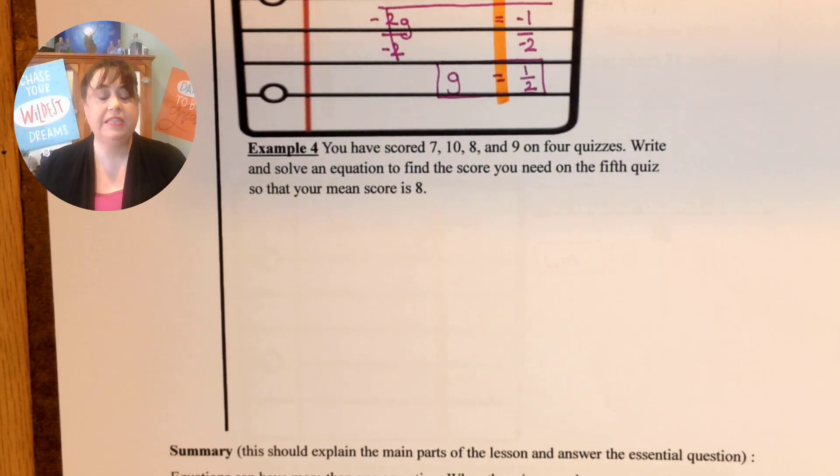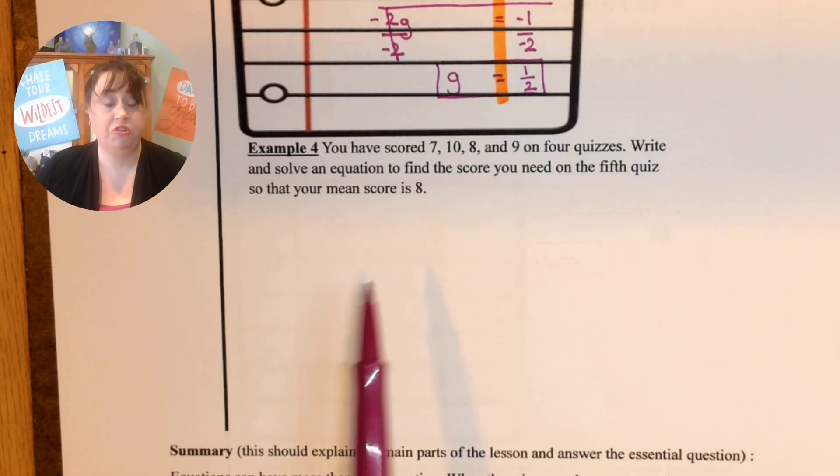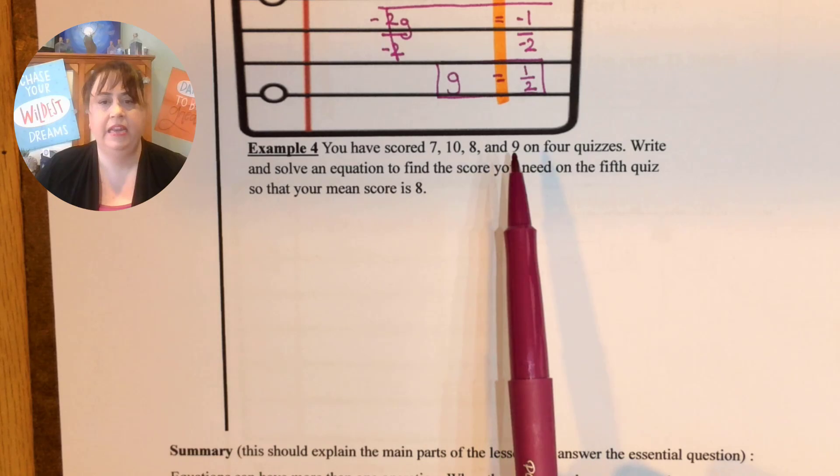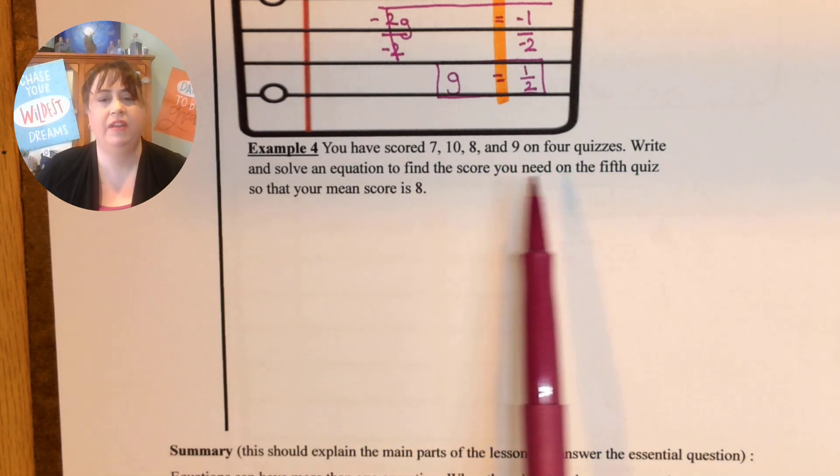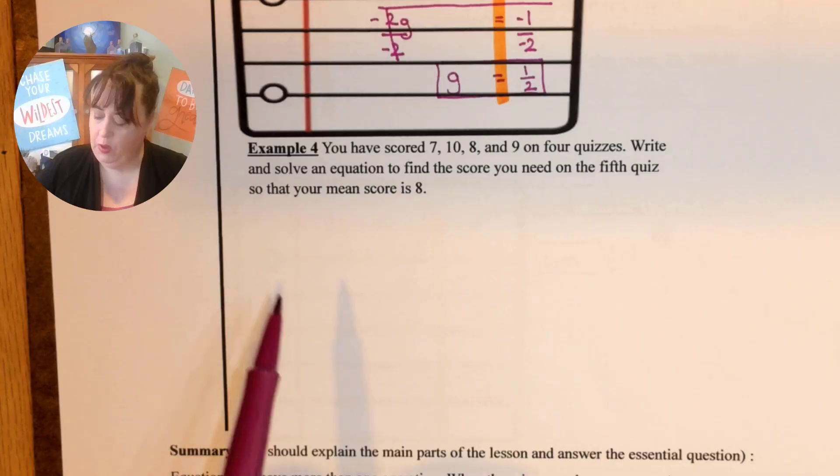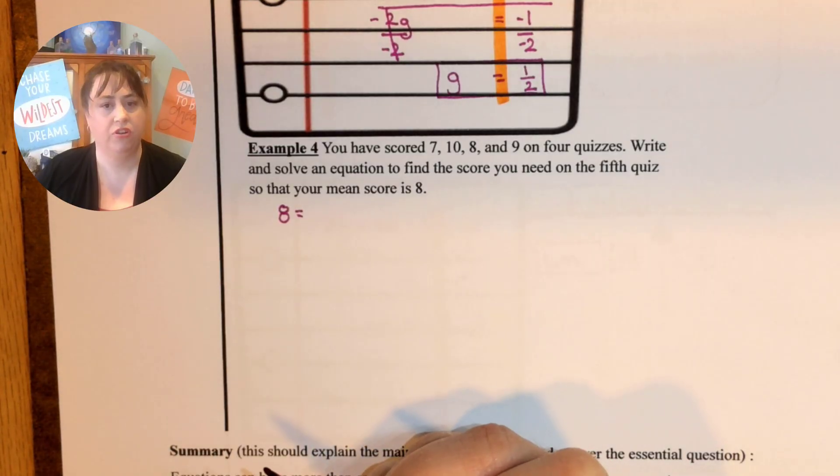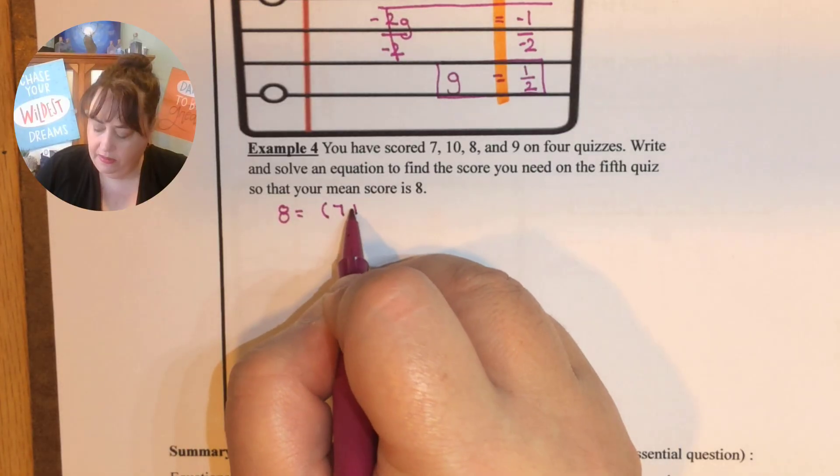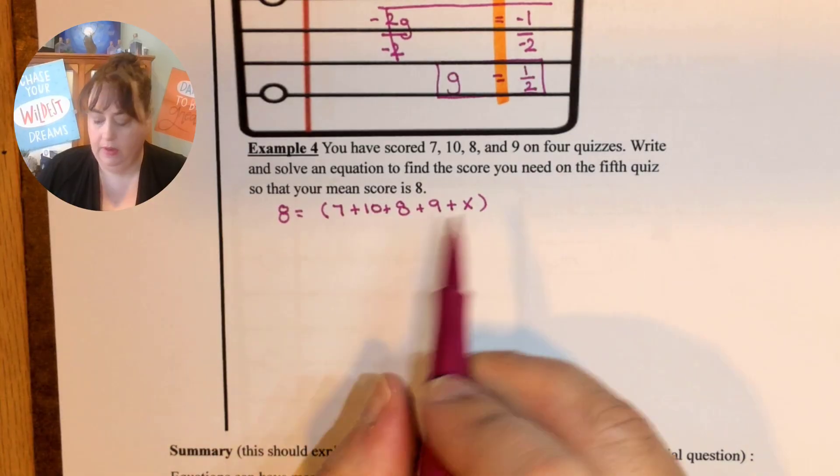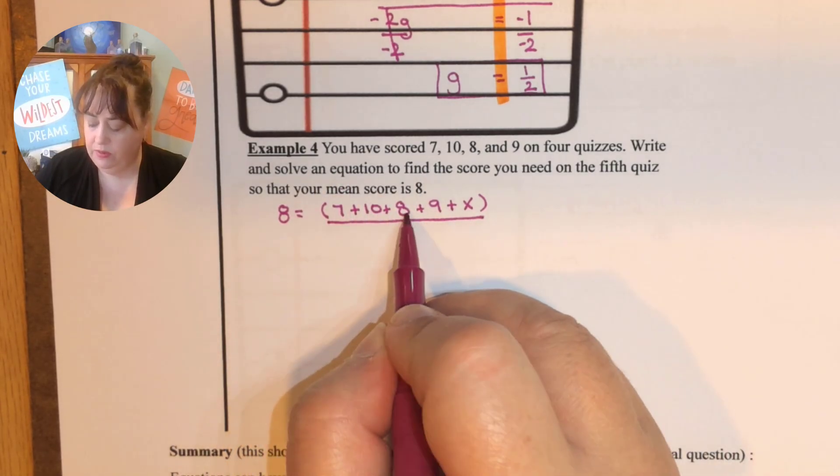Let's look at this last problem. So this last problem here, it's a word problem. This is where we can look at some of our distributive property and parentheses and things like that in a word problem. You've scored a 7, 10, 8 and 9 on four different quizzes. Write and solve an equation to find the score you need on the fifth quiz so that your mean score is 8. So let's look at this. We know that when we end we want to have an 8. And how do we find means? Well means are just averages. So we are going to add up a 7, a 10, an 8, a 9 and an unknown score and divide it all by 5. Because there's 1, 2, 3, 4, 5 scores.